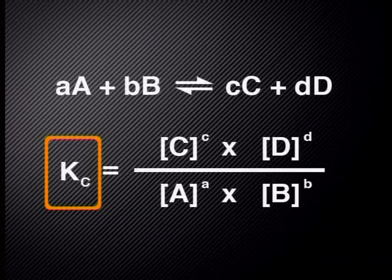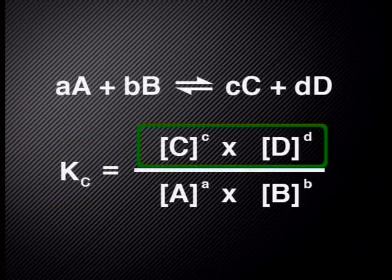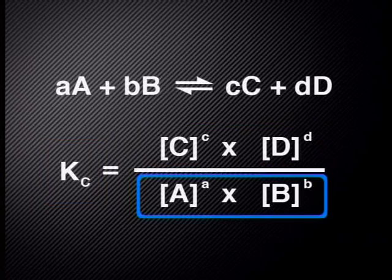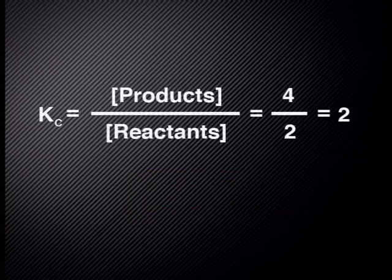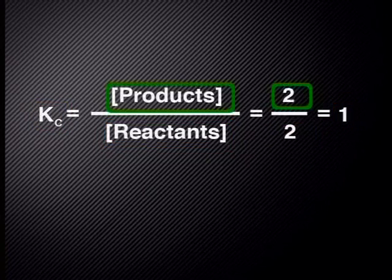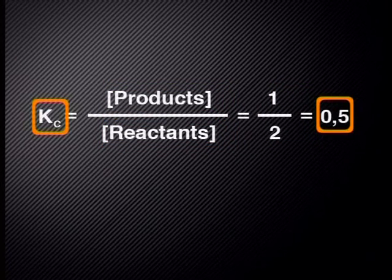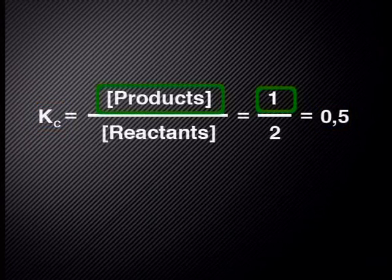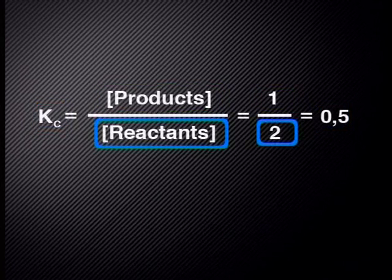In a previous lesson, we learned about the equilibrium constant and calculating the Kc. The formula is: Kc equals the product of the concentrations of the products divided by the product of the concentrations of the reactants at equilibrium. If Kc is bigger than 1, the concentration of the products is more than the concentration of the reactants. If Kc equals 1, the concentrations are equal. If Kc is smaller than 1, the concentration of the products is less than the concentration of the reactants.